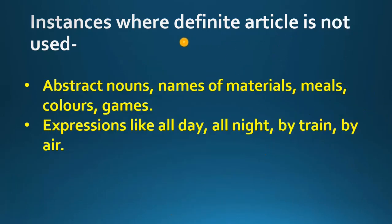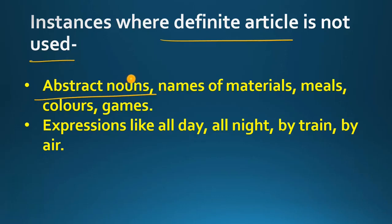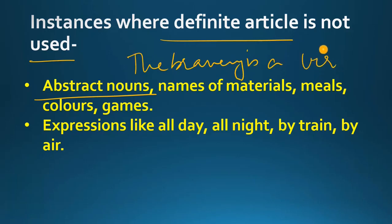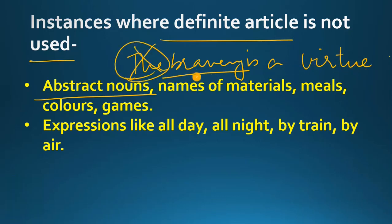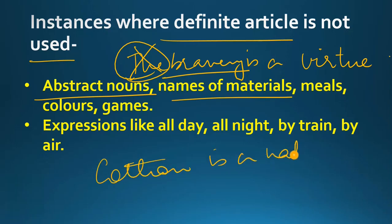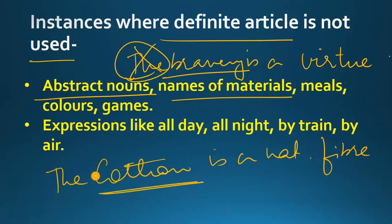Now there are some instances जहाँ पर definite article use नहीं होता. जब हम कोई abstract noun — किसी चीज़ की quality को refer करते हैं — उससे पहले हम 'the' use नहीं करते. For example, 'Bravery is a virtue' — not 'the bravery is a virtue.' यहाँ पर bravery एक abstract noun है, इससे पहले 'the' नहीं आएगा. Similarly, names of materials — for example, 'Cotton is a natural fiber' — we will not say 'the cotton is a natural fiber.'